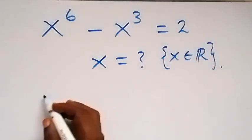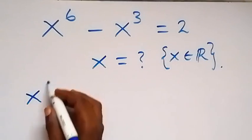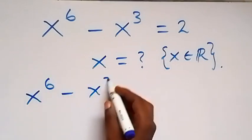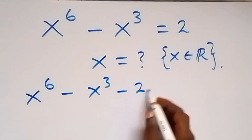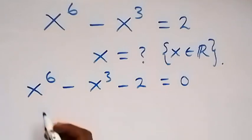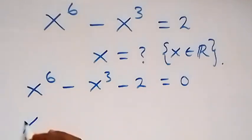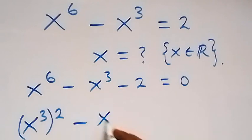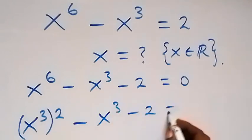Let's take 2 to this side and this becomes x raised to power 6 minus x raised to power 3 minus 2 equals to 0. We can also write x raised to power 6 as x raised to power 3, then raised to power 2, minus x raised to power 3 minus 2 equals to 0.